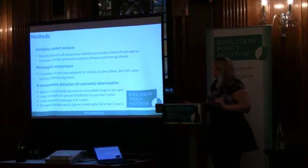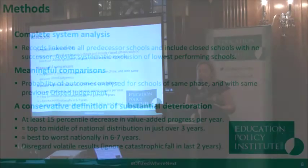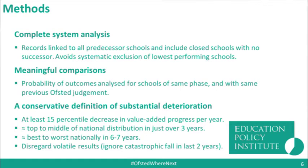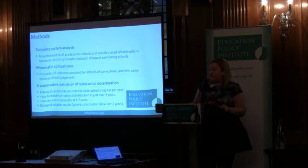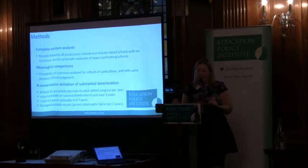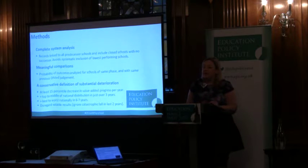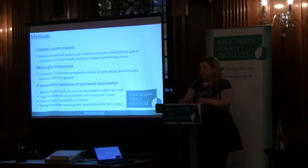Our methods were first to do a complete system analysis. We gathered inspection records for all schools and linked back together schools where there had been a change such as becoming a sponsored academy or amalgamation, so we can see the full history of schools. We did this to avoid systematically excluding schools that are particularly low performing — which can happen if we don't link those schools back together, since schools that have closed and whose new provision hasn't yet been re-inspected would otherwise be excluded.